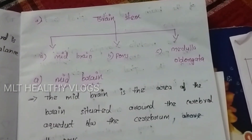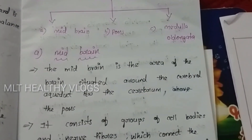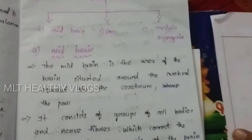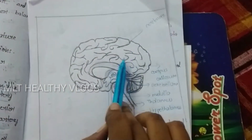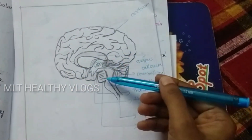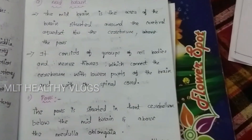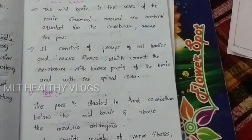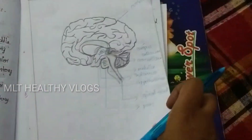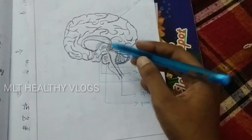Now we look at the brainstem, which has three parts. The midbrain is the area of the brain situated between the cerebrum above and the pons below. It consists of groups of cell bodies and nerve fibers which connect the cerebrum with the lower parts of the brain and the spinal cord.